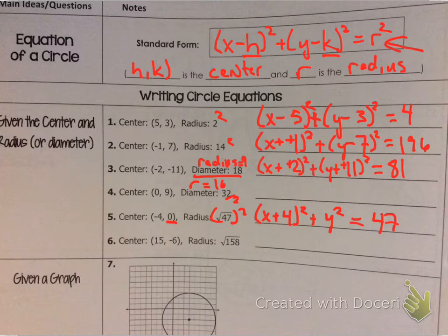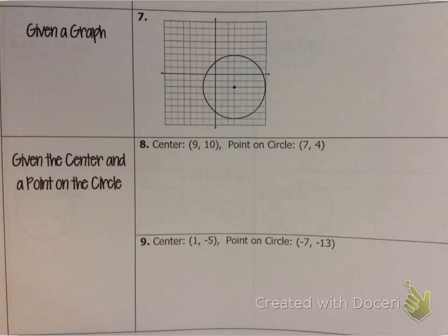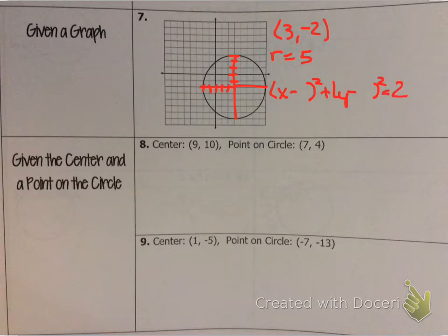I'm not going to do number 6, but I'll do number 5. Here I would say x minus, actually that's going to become plus 4 squared, plus, since that's a 0 there, I'm just going to say y squared. I don't have to put y minus 0 squared. And then when you square this, that gets rid of the square root, leaving you 47. So you can kind of see there how those would work. Now let's look at number 7. How do I get it from a graph?